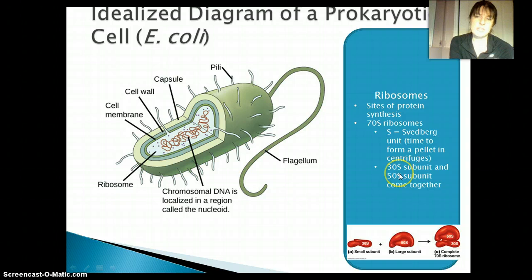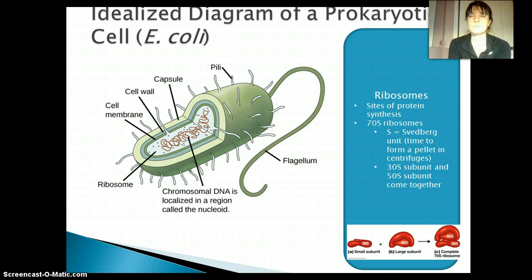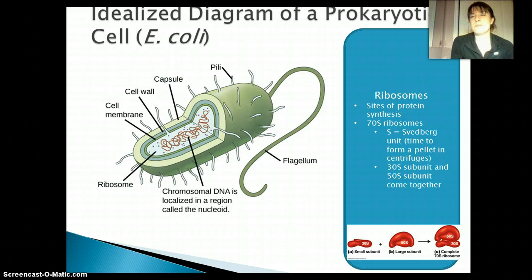70S ribosomes are in prokaryotic cells. That's important because a lot of things like antibiotics work by attacking just ribosomes that are that size.